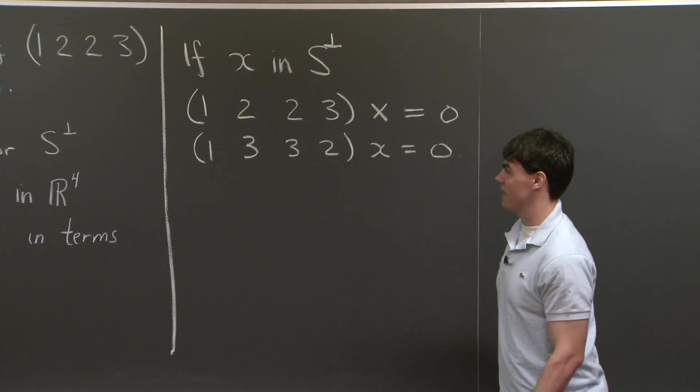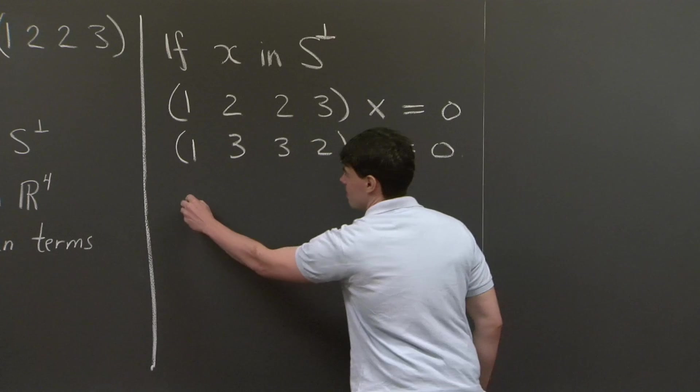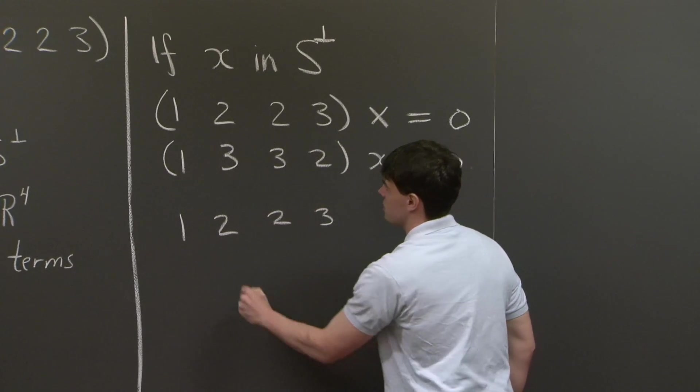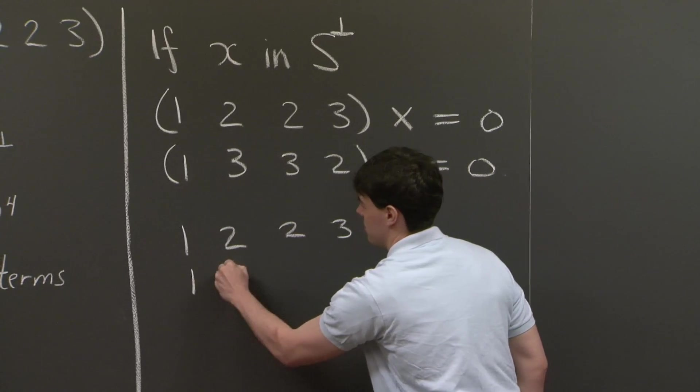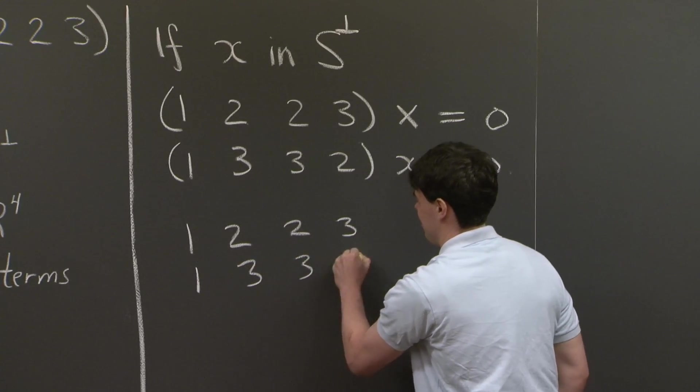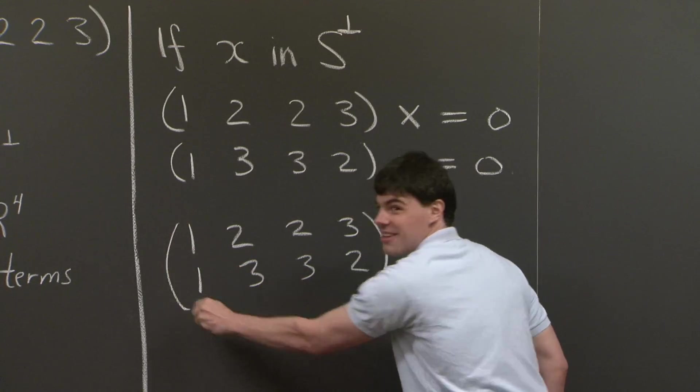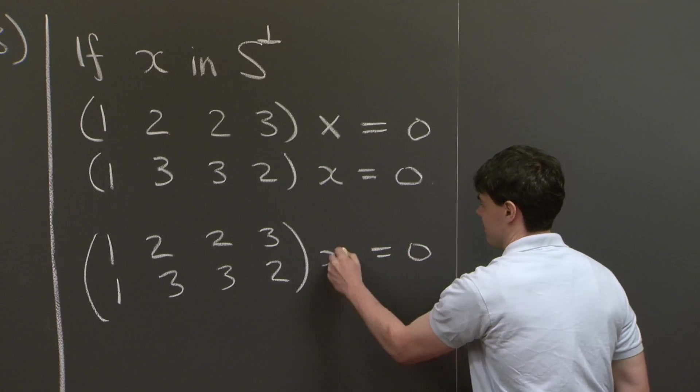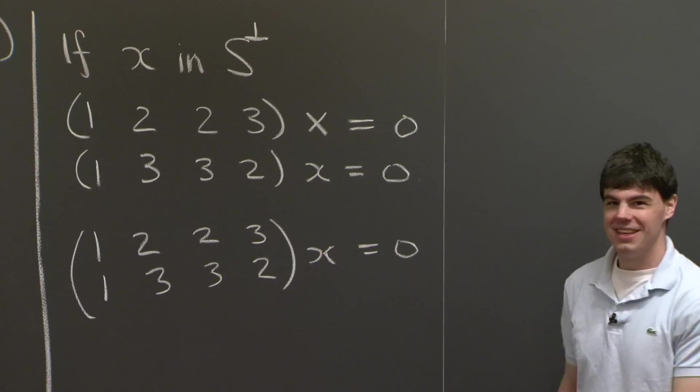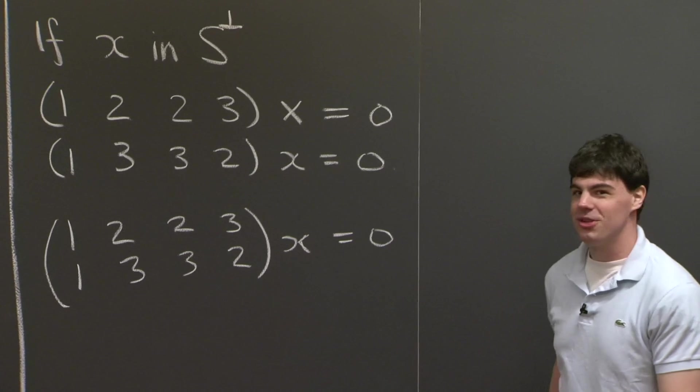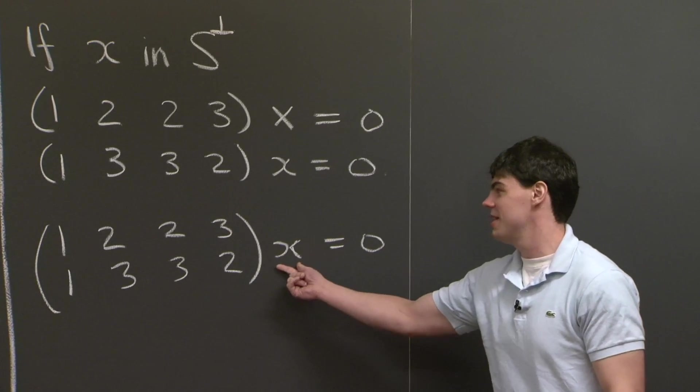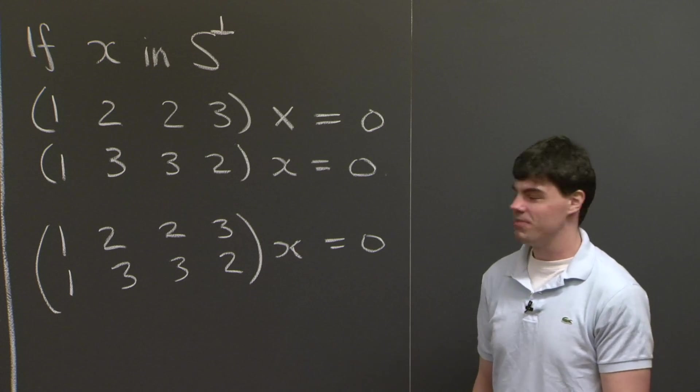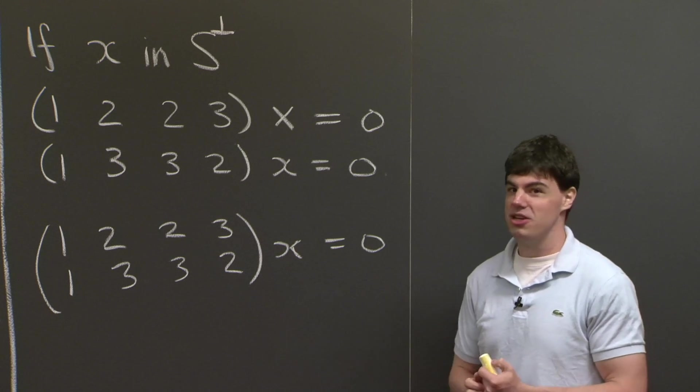So any vector x that's in S perp must be orthogonal to both of these vectors. So what we can do is we can write this as a matrix equation. And we do this by combining these two vectors as rows of the matrix.